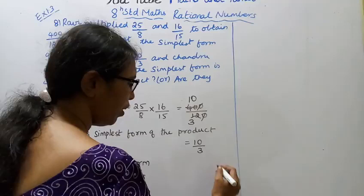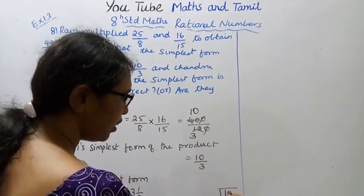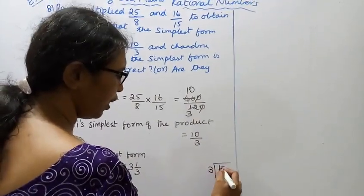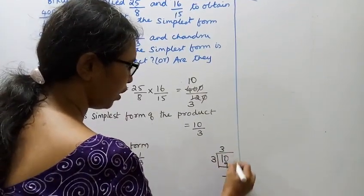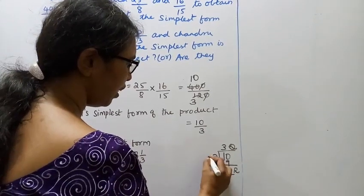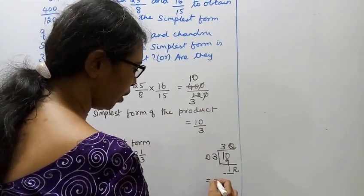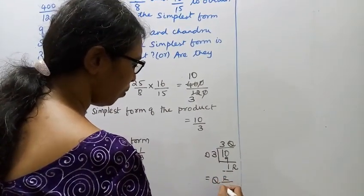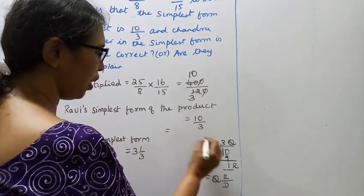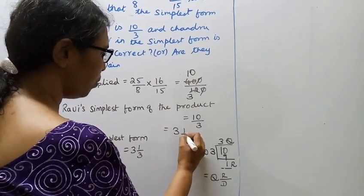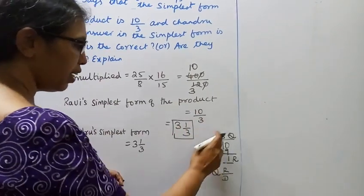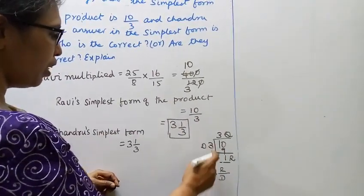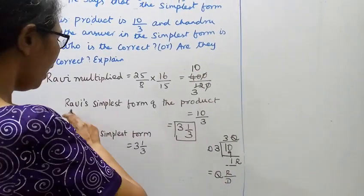Converting improper fraction to mixed number: 10 divided by 3 gives quotient 3, remainder 1. So it becomes 3 1 by 3, which is quotient plus remainder by divisor.